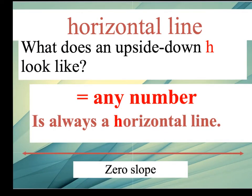So what if your line was a horizontal line? What kind of slope would you have? Well, one question to think of is what does an upside down H look like? I'm going to go ahead and draw an upside down H here. An upside down H looks kind of like a Y without a longer tail. We can curl it and there's a Y.